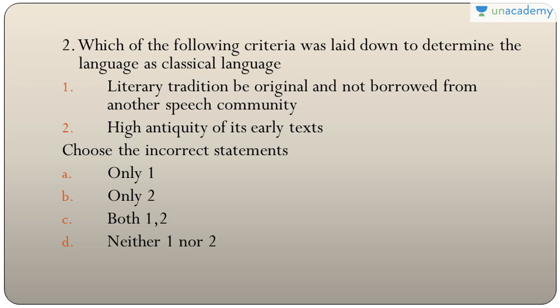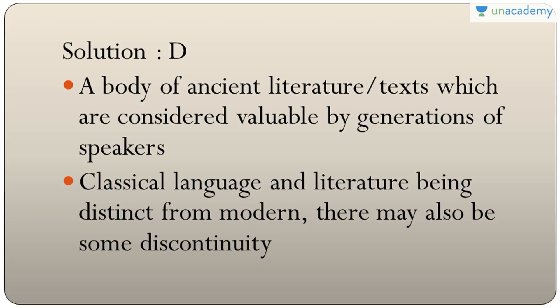Question two: which criteria for determining a classical language are incorrect — literary tradition should be original and not borrowed from another speech community, and high antiquity of its early texts? Both are actually correct criteria, so as incorrect statement questions the answer is D — neither one nor two. Other criteria include: a body of ancient literature considered valuable by generations of speakers, and the classical language must be distinct from modern literature.